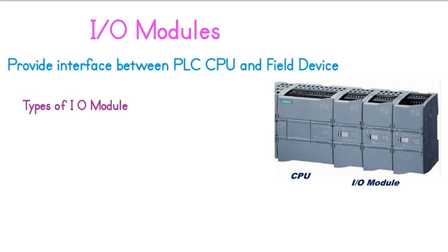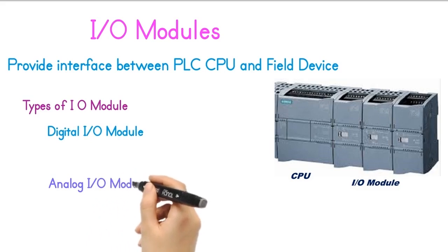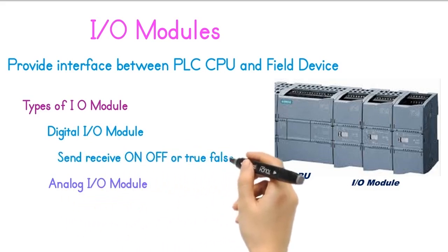There are two types of I/O Modules. Digital I/O Module and Analog I/O Module. Digital I/O send or receive On/Off or True-False signals, such as a switch being open or closed.